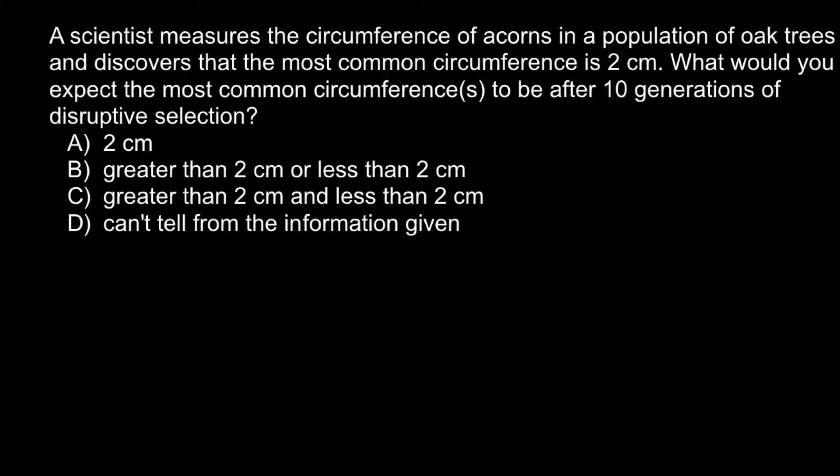What would you expect the most common circumference to be after 10 generations of disruptive selection? Here are the four answers to choose from: Answer A, 2 centimeters; Answer B, greater than 2 centimeters or less than 2 centimeters; Answer C, greater than 2 centimeters and less than 2 centimeters; and Answer D, can't tell from the information given.